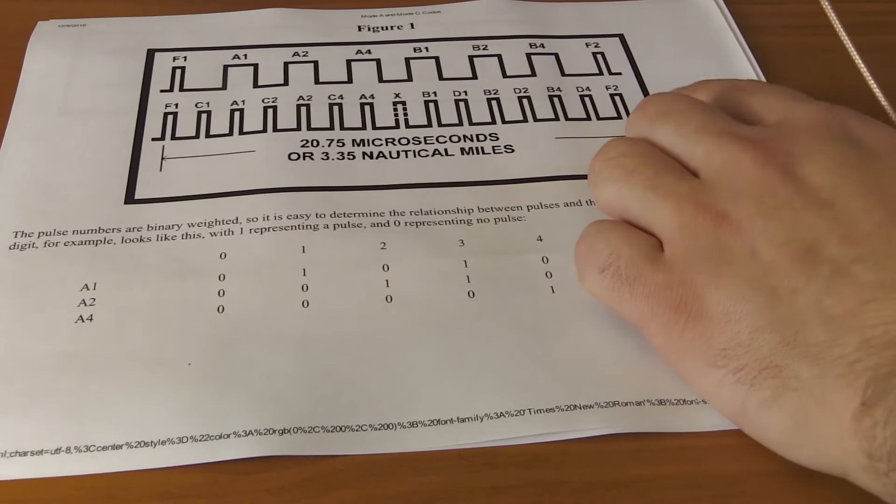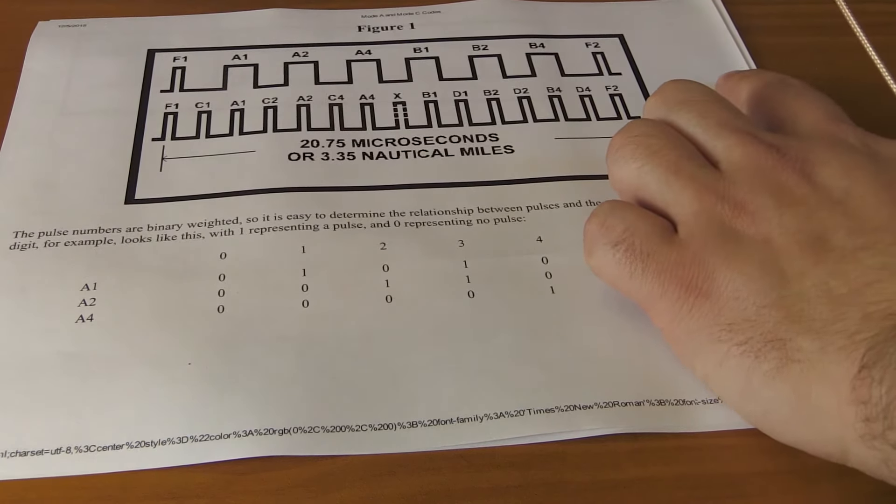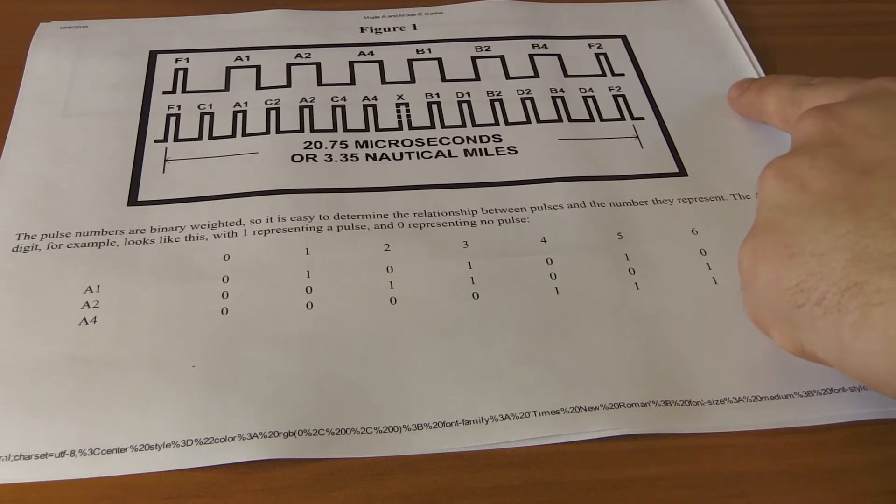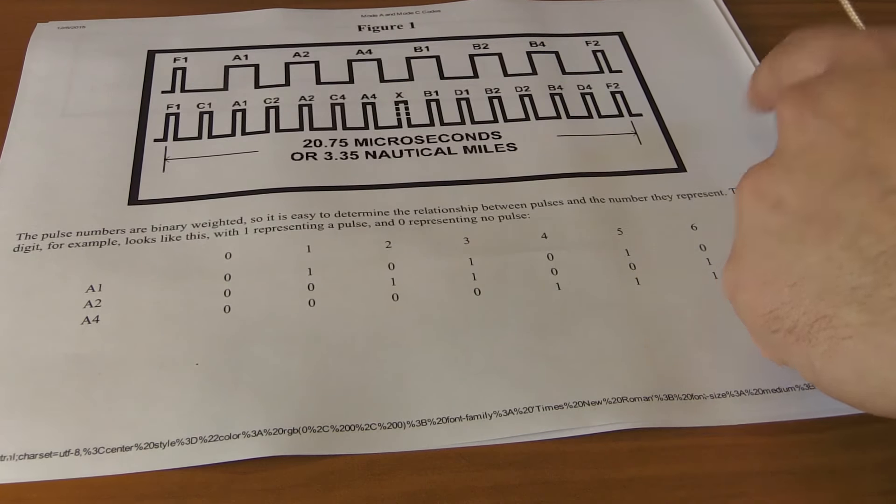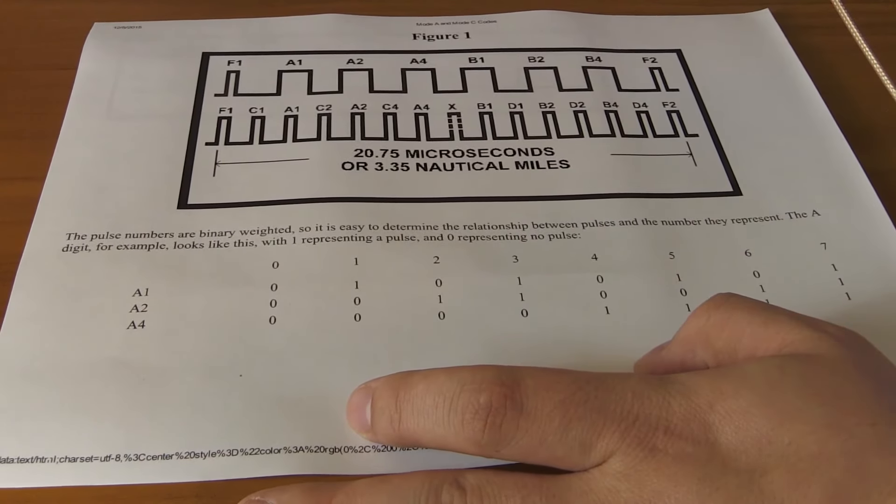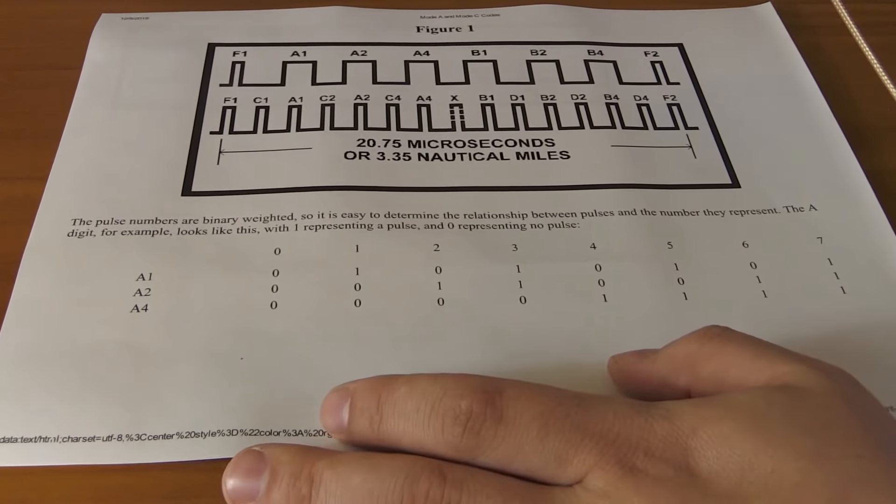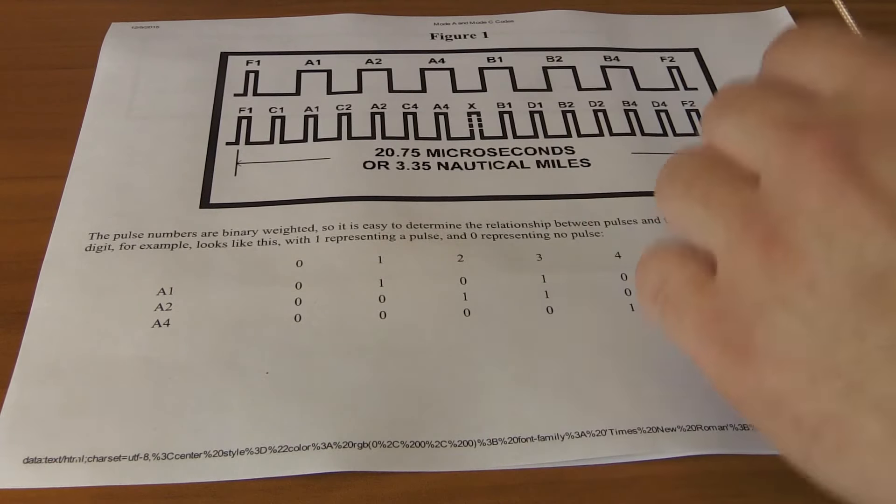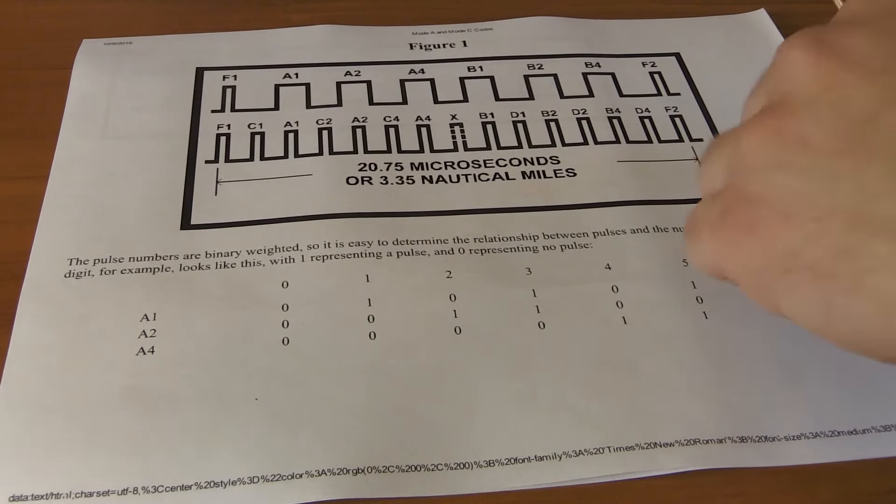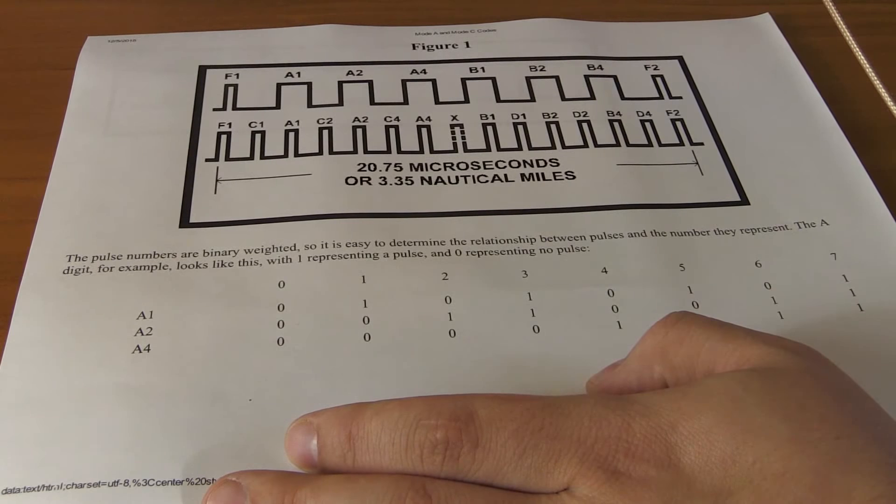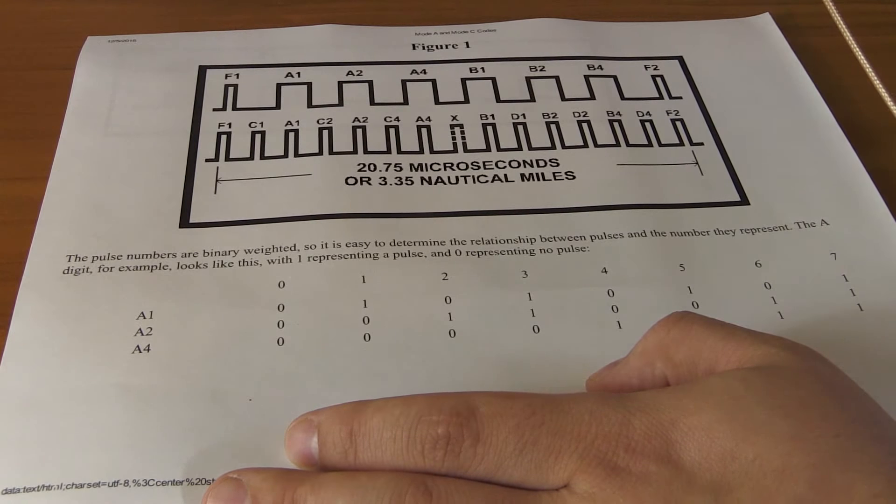And something that's not pictured here, there's another pulse that's a little bit further out about here, which is called the ident pulse. If it is present, then the radar controller sees a little, sometimes it blinks, sometimes it highlights, it sees something on the screen. And that's useful when the controller is not on top of all of his numbers and wants to be certain that you are you. He will tell you to ident, and you push the ident button on the transponder. And then, like I said, in the next mode A interrogation, it'll have this extra pulse present, which will tell the radar to mark you in some way or another on the radar screen.